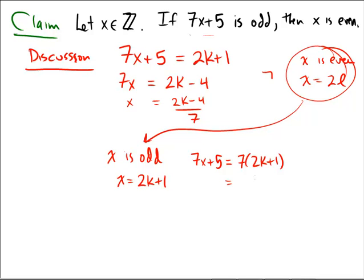And if it's equal to 14k plus 7, we would have 7k, I forgot to add the 5, sorry. 7 plus 5, we would have 14k plus 12, and that's equal to 2 times 7k plus 6.